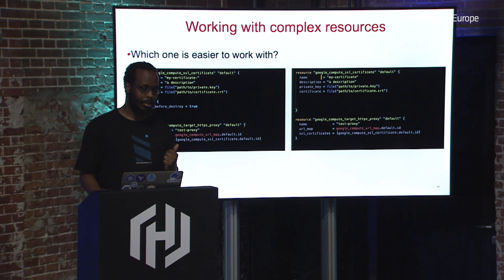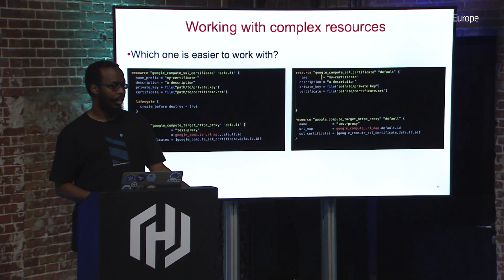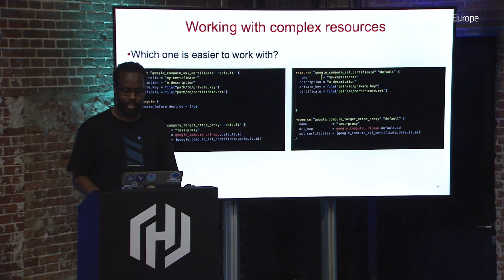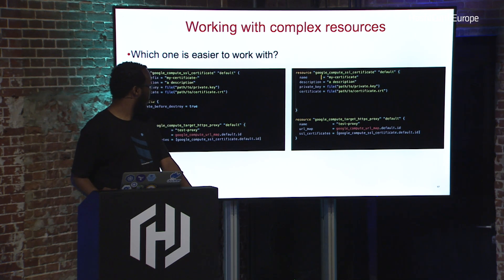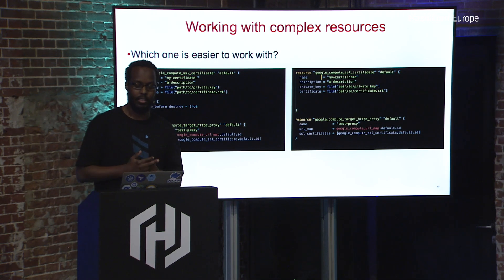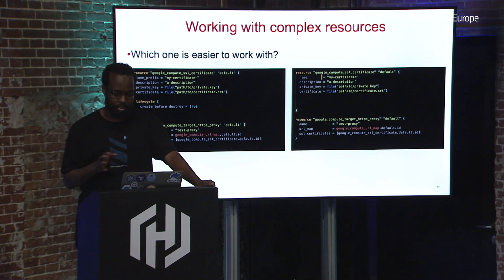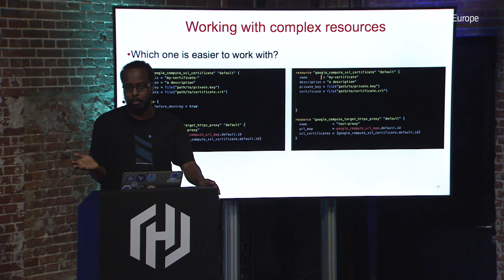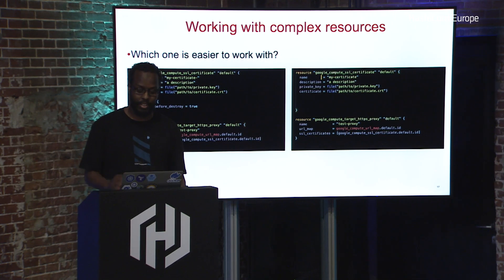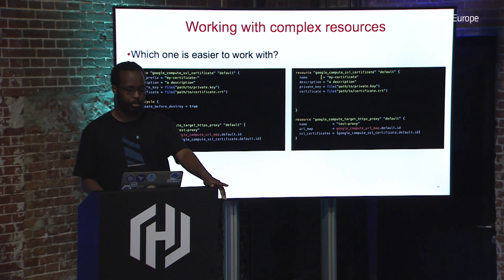Which configuration is easier to work with? The configuration on the right is what a lot of people do, and that's problematic. The configuration on the left is the better one. The better config uses something called name_prefix, which is a field very common in the Google Cloud Terraform provider. We use it a lot with resources that don't allow updates — it saves you a lot of headache. The other key thing is the lifecycle block.